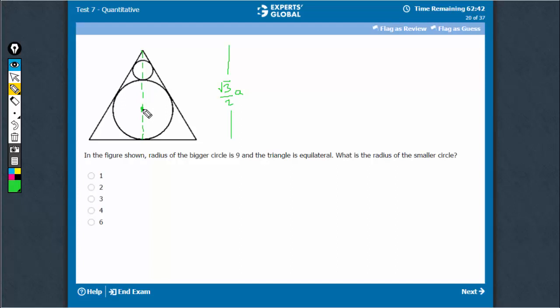Centroid is where medians intersect and this would be in the ratio 2 is to 1. Therefore, one-third of the height, 1 by 3, is this much because of the 2 is to 1 ratio. One-third of the height, which is root 3 upon 2a, is equal to the radius of the bigger circle.